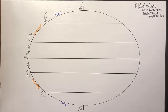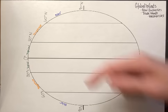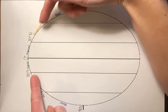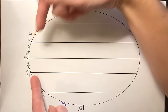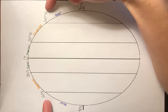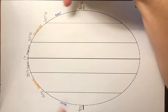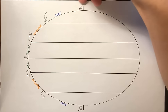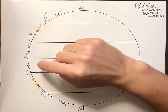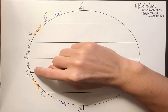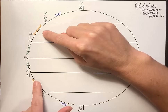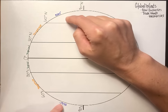A few things I already have labeled. I've got lines of latitude labeled: zero degrees, 30 degrees north and south, 60 degrees north and south, and 90 degrees north and south. I have our climate zones labeled — tropical, temperate, and polar.